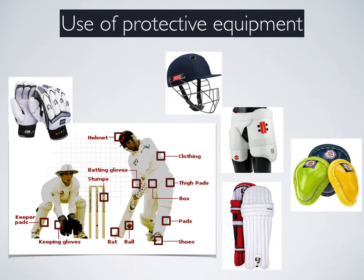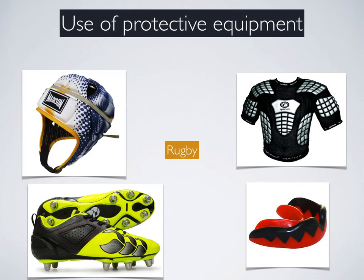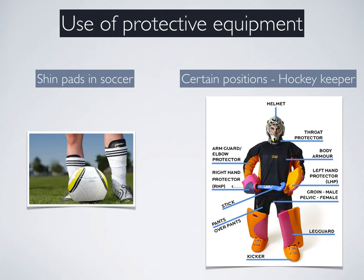Moving on to use of protective equipment. In cricket, players wear gloves, helmets, thigh pads, leg pads and guards that protect other parts of the body such as the reproductive organs. In rugby, players often wear headgear and shoulder pads, and it is mandatory in many sports to wear a mouth guard to avoid injury to the teeth and jaw. Football boots with studs ensure balance in slippery conditions. In soccer, shin pads are used to avoid contact with the shins. Hockey goalkeepers wear full padding to avoid contact with the ball. This protective equipment is designed to reduce the risk of soft and hard tissue injury.